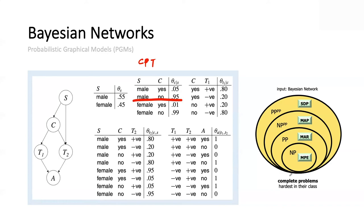People are typically interested in posing different kinds of queries with respect to the distributions induced by these models. We went over MPE, MAR, MAP, and SDP — all difficult problems. Inference on Bayesian networks is not straightforward in contrast to neural networks, decision trees, and random forests, where inference is easy and basically linear in the size of the classifier. The MAR query is the one typically used to do classification.